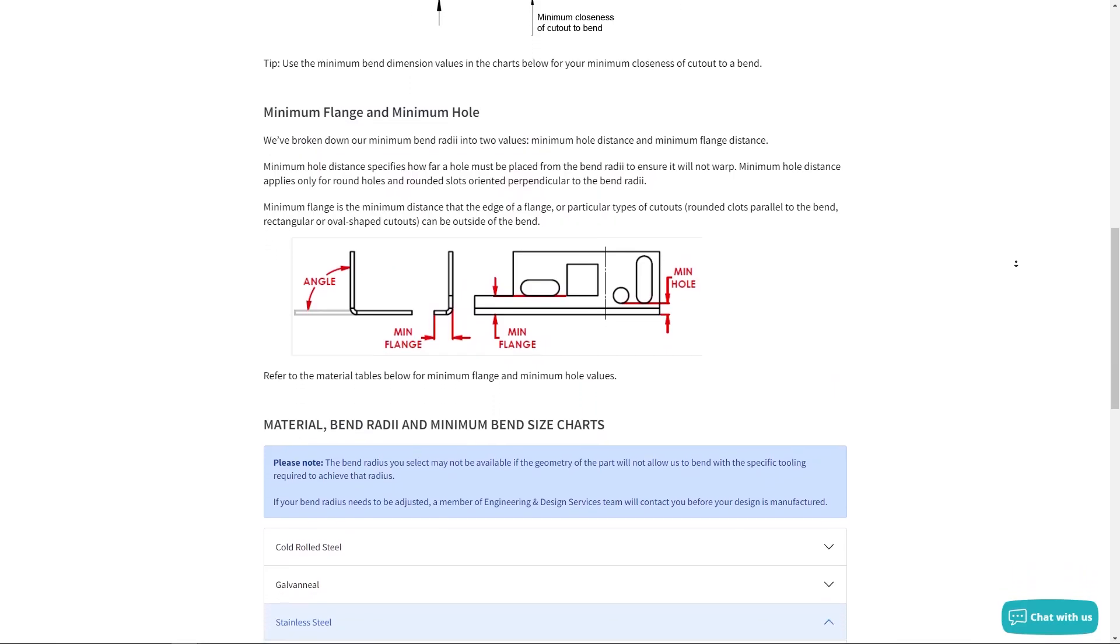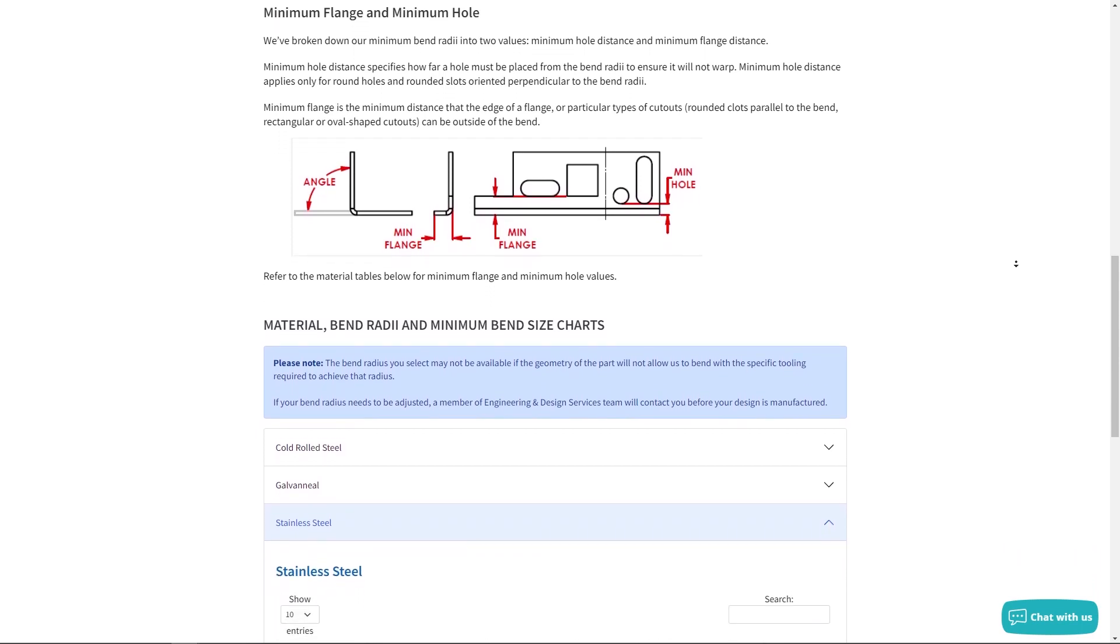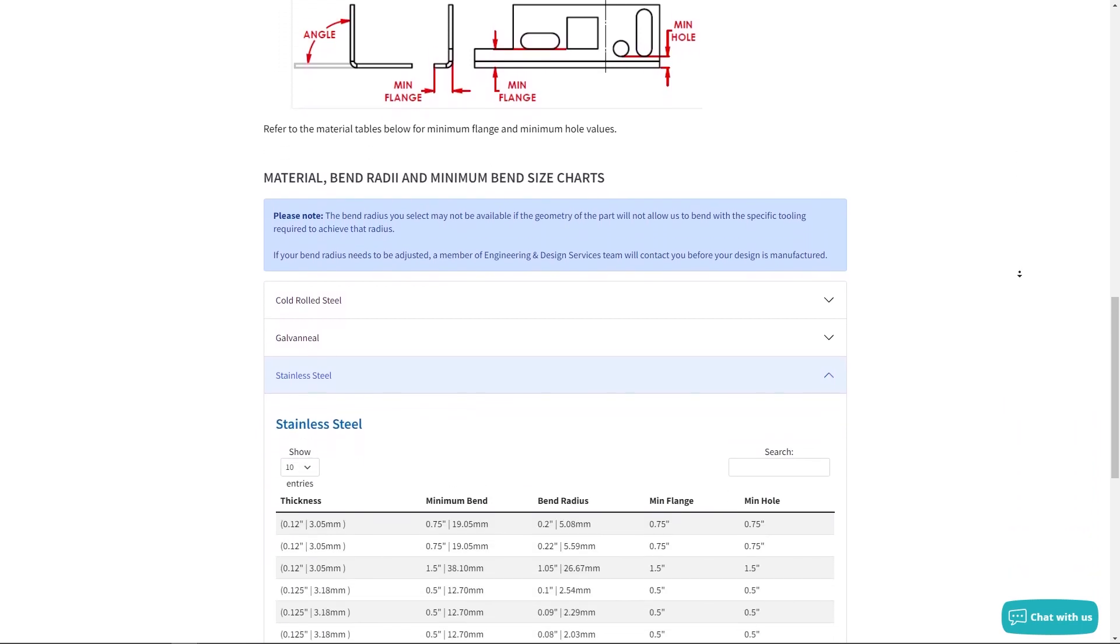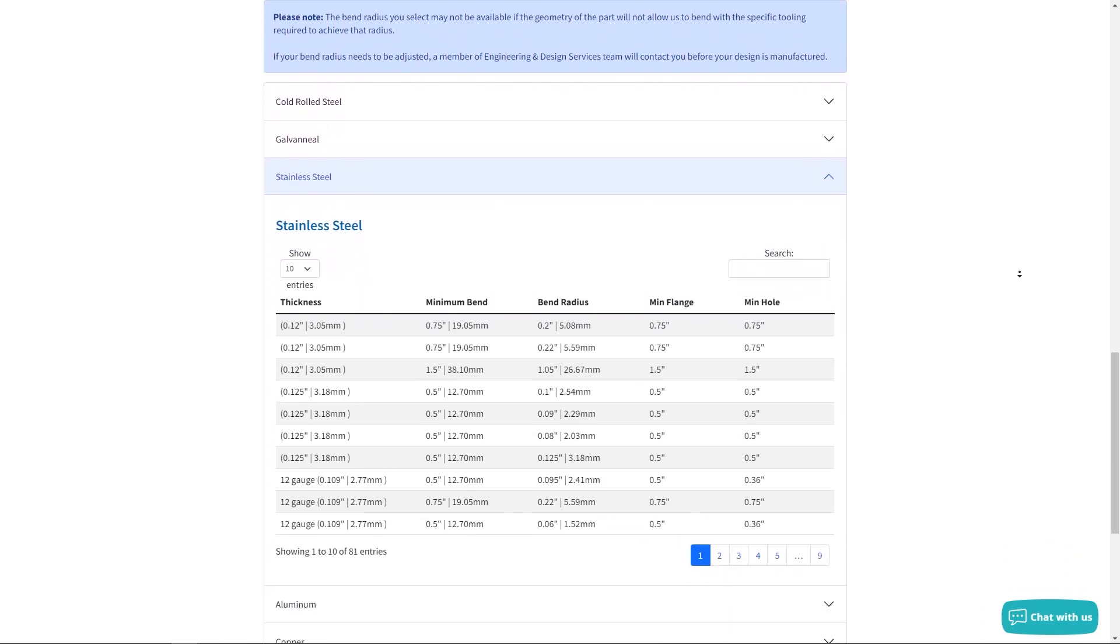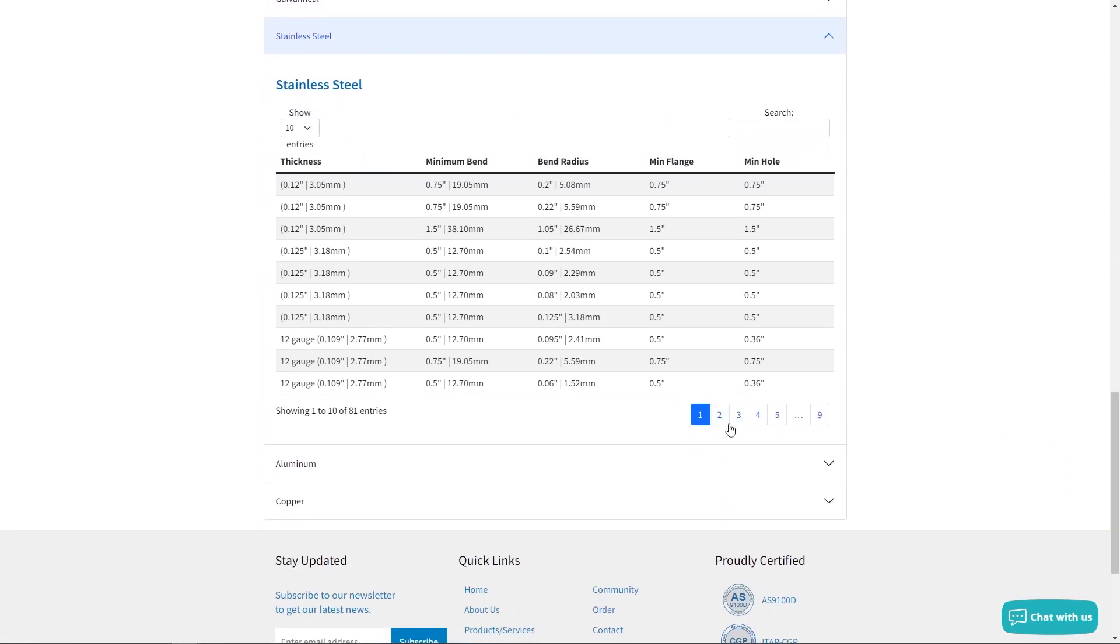You can find a chart of these values on our website. This will give you guidance for your designs based on the material thickness you choose. If you're ever unsure about anything minimum flange, minimum hole, or anything else with your design, our engineers and design service team is here to help.